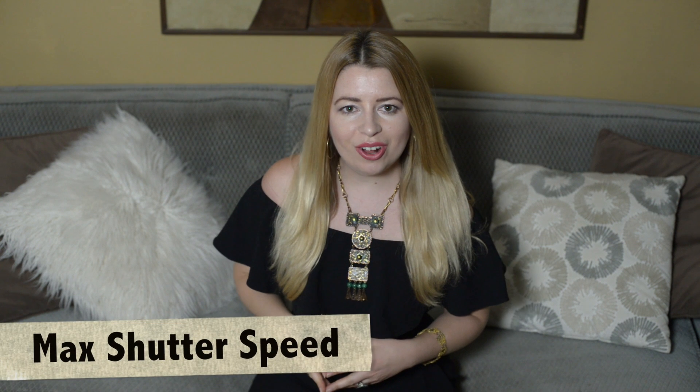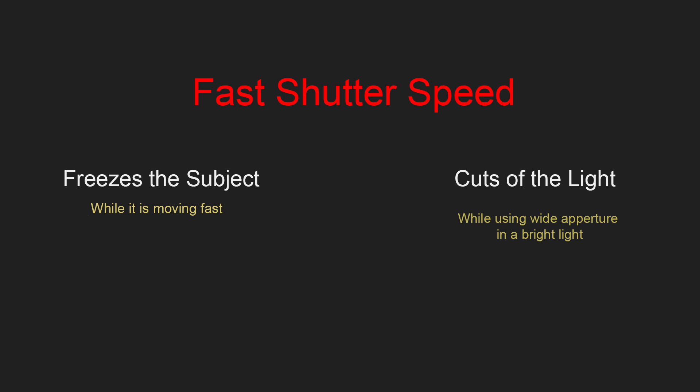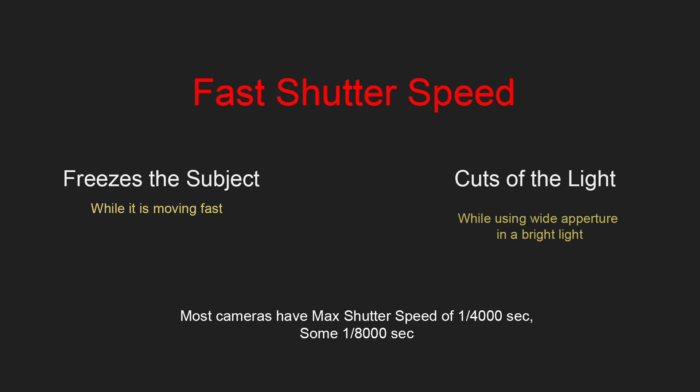Different cameras also can have a different maximum shutter speed. As you probably already know, a fast shutter speed can do two things. First of all, it can freeze the subject while it's moving fast, and also it can help to cut the light when we are using wide aperture in bright light conditions. Most cameras have a maximum shutter speed of 1/4000 of a second. Some of them can even go as fast as 1/8000 of a second.